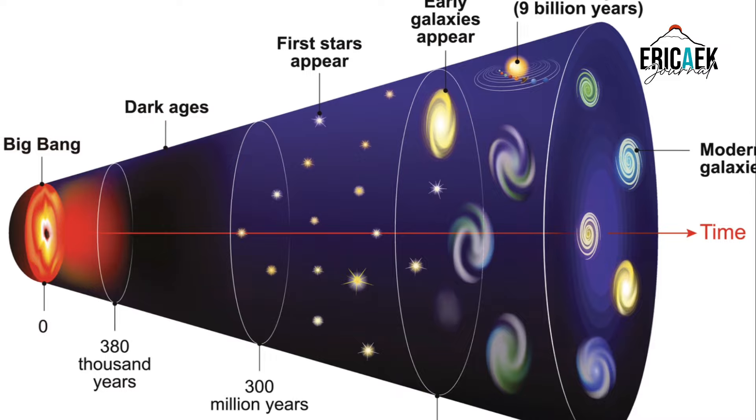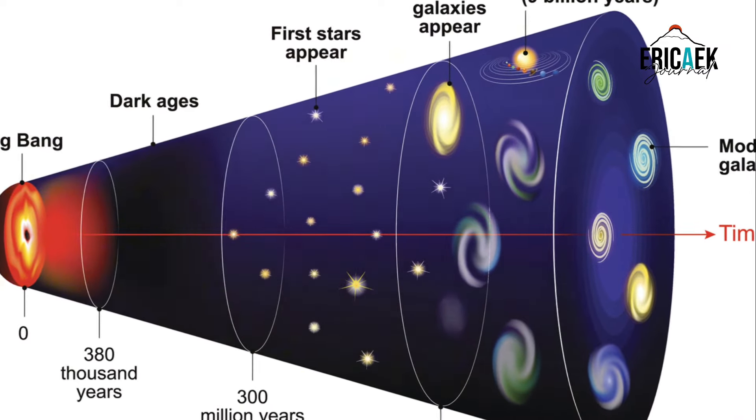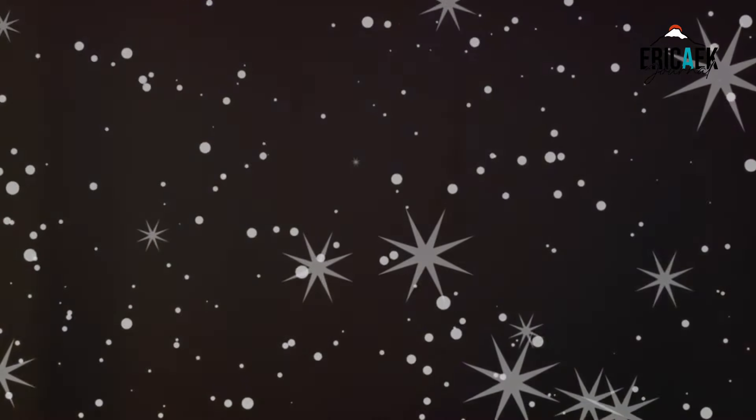As the universe grew, it cooled down and tiny particles started clumping together. These first particles were the building blocks of stars, mostly hydrogen and helium, the simplest elements.